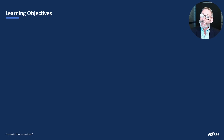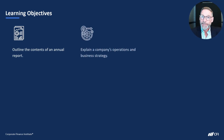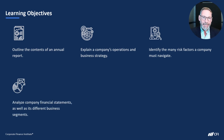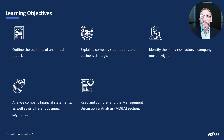By the end of this course on reading financial statements, you'll be able to outline the contents of an annual report. You'll also be able to explain a company's operations and business strategy. Further, you're going to be able to identify the many risk factors a company must navigate. We then move on to analyzing a company's set of financial statements, as well as analyzing different business segments. We'll then move on to exploring the MD&A section, or Management Discussion and Analysis section.